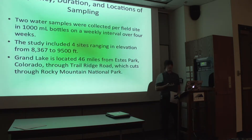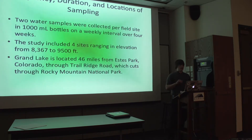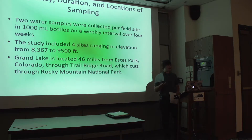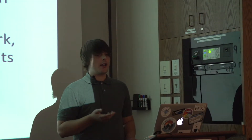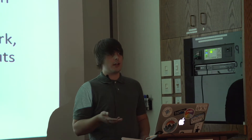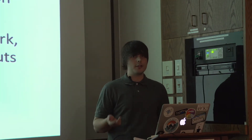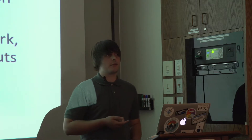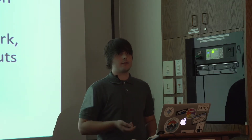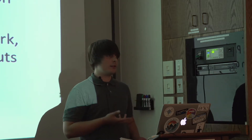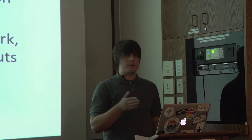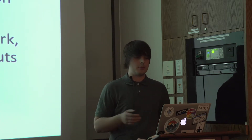The purpose of this study was to investigate Crater Gulch's role in Grand Lake transparency. In terms of frequency, duration, and locations, two water samples were collected in 1,000 milliliter bottles per field site. This was done on a weekly interval for four weeks. The study included four sites ranging in elevation from 8,367 to 9,500 feet. Grand Lake is located 46 miles from Estes Park, Colorado, which cuts through Trail Ridge Road via Rocky Mountain National Park.